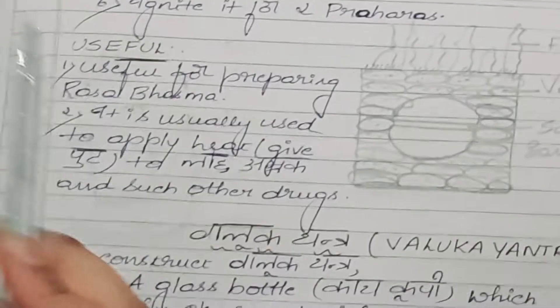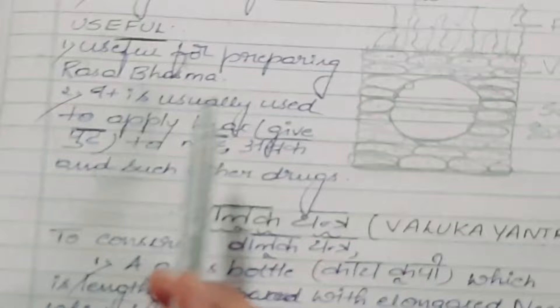It is used for preparing rasa bhasma, and also it is usually used to apply heat or to give putta to loha, abraka, and other such drugs.